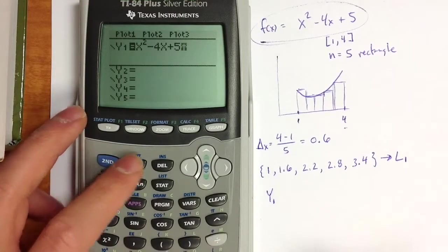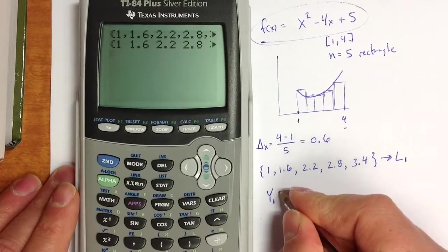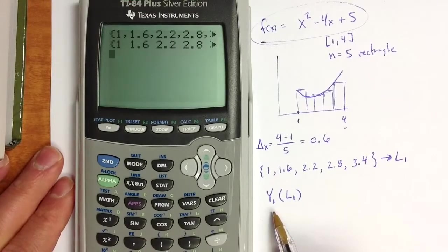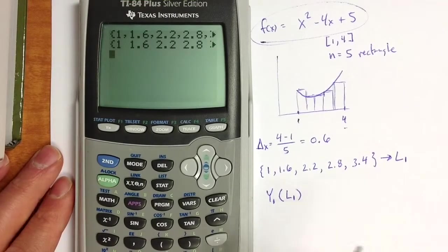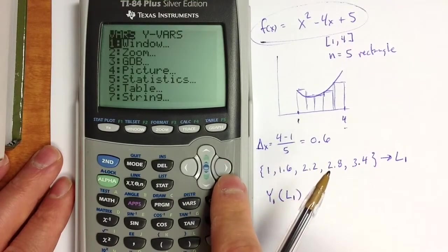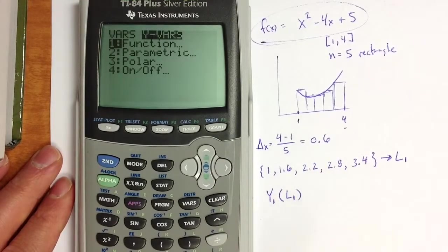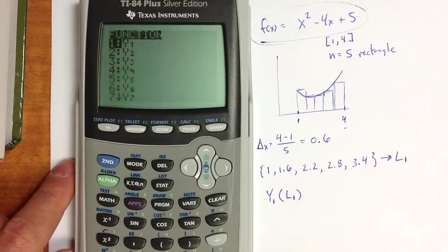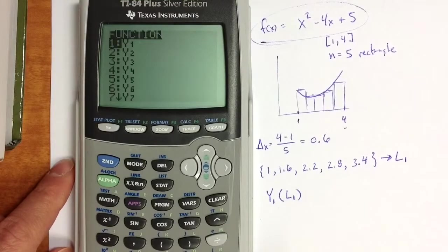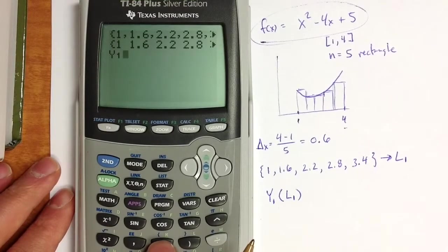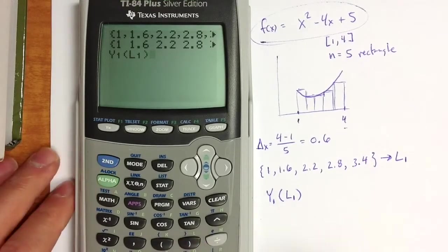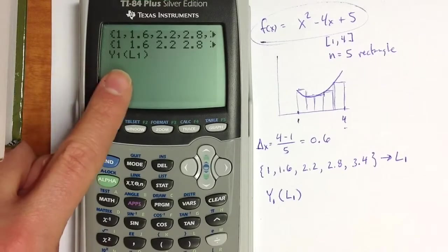Then if I go back to the home screen, I can apply that function to list 1. The y1 function, that variable, we can make a reference to that variable on the home screen by going to vars, hitting the vars key, and then using the right arrow to go over to the yvars menu. I want to choose function, and then y1. All 10 possible functions are listed here. y1 is the one we want. Using function notation, I want to open up a parenthesis and then type list 1 inside the parenthesis. So this is going to apply the y1 function to list 1.